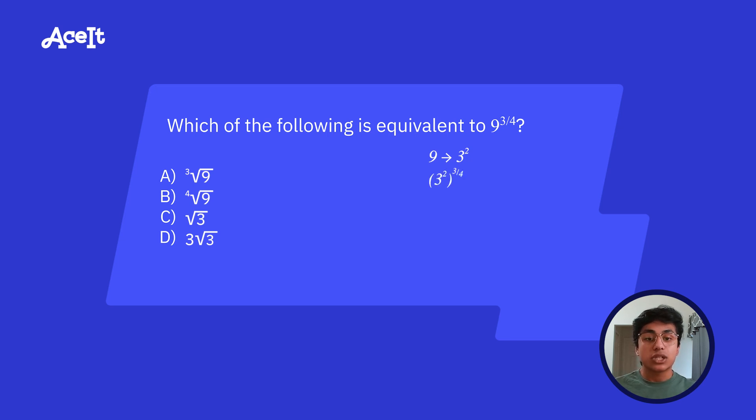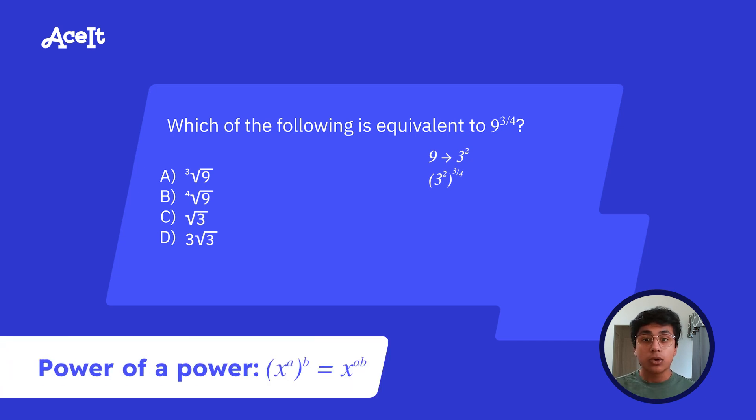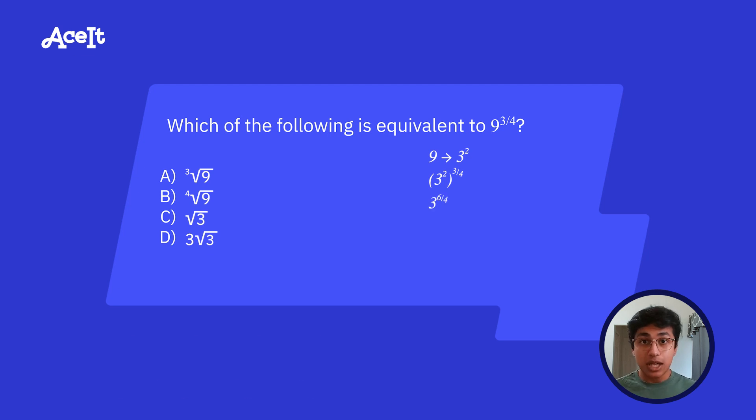So that'll leave us with three squared raised to the power of three over four. Now we can apply the power of a power rule we talked about earlier and make it three to the power of six over four. Now we're going to stop for a second because you should always simplify your fractions because on the SAT, answer choices nine times out of 10 will be given in simplified fractions. So it just makes things easier. So let's quickly pause and change the six fourths to three over two.